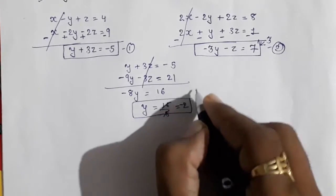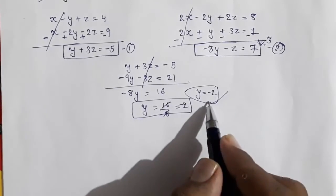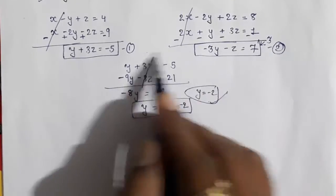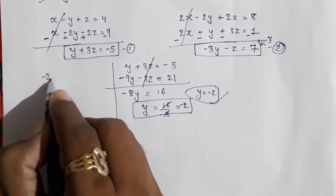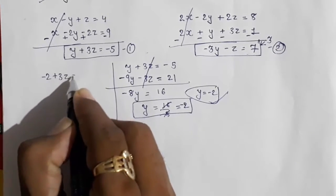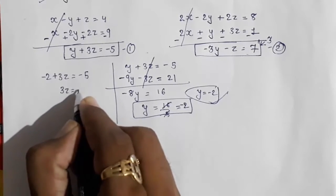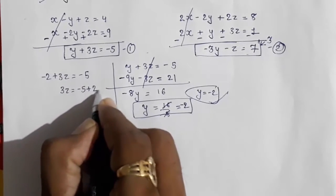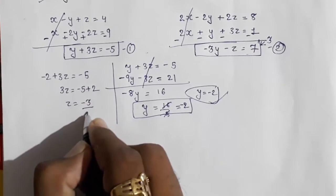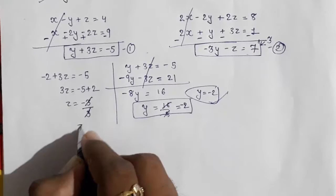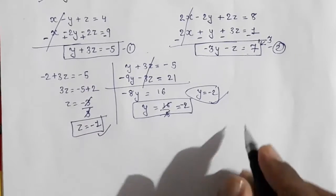We got y equals minus 2. Now substituting y equals minus 2 into y plus 3z equals minus 5: minus 2 plus 3z equals minus 5, so 3z equals minus 3, and z equals minus 1.